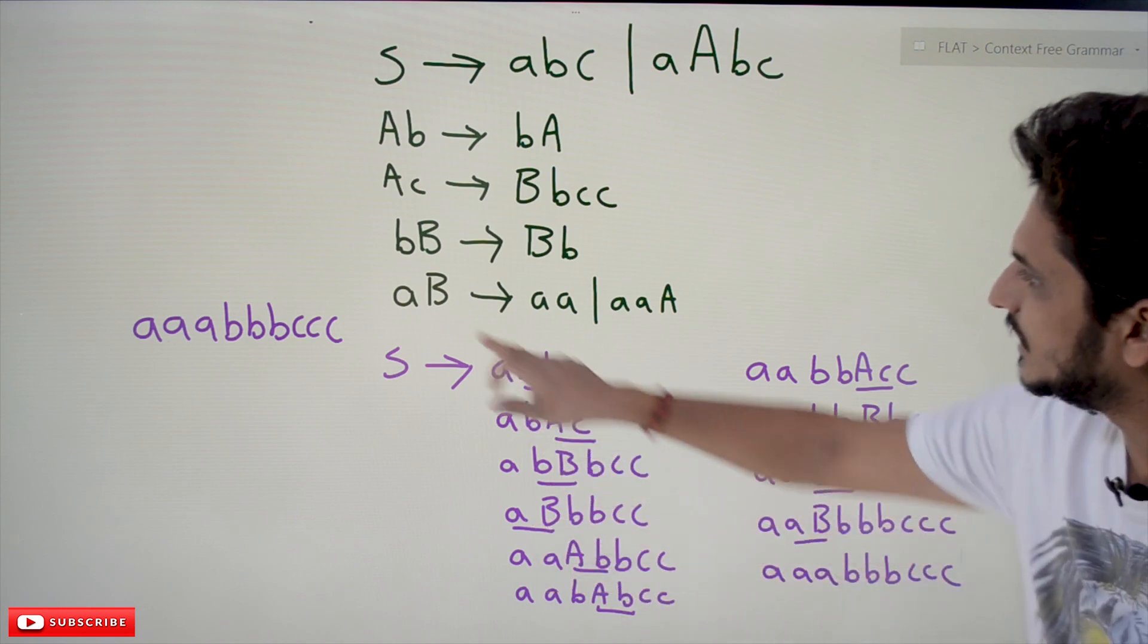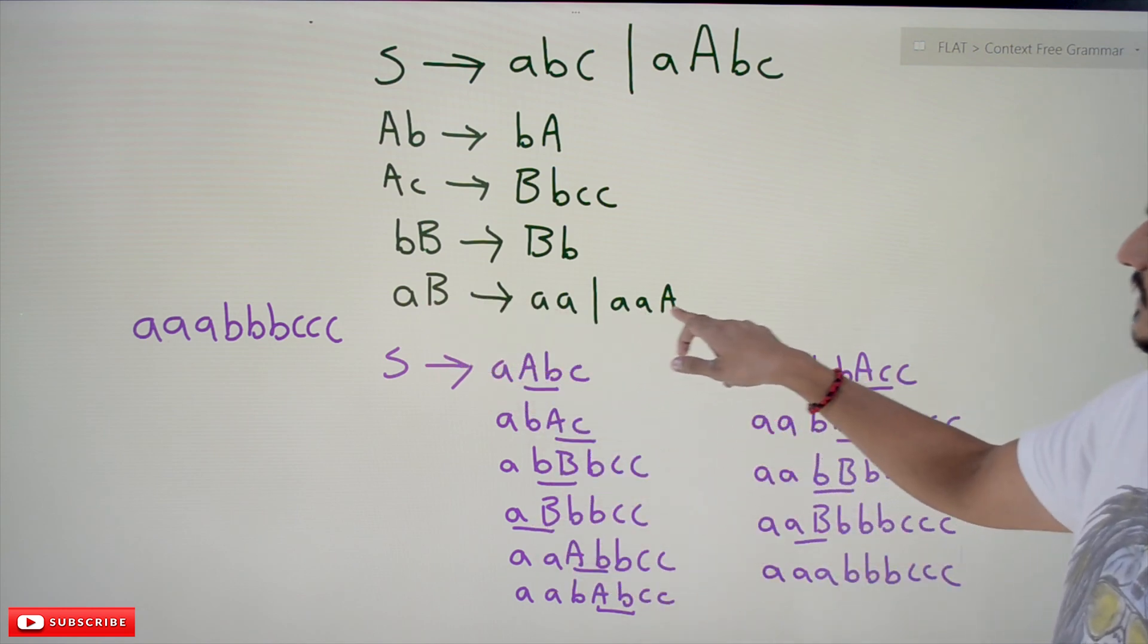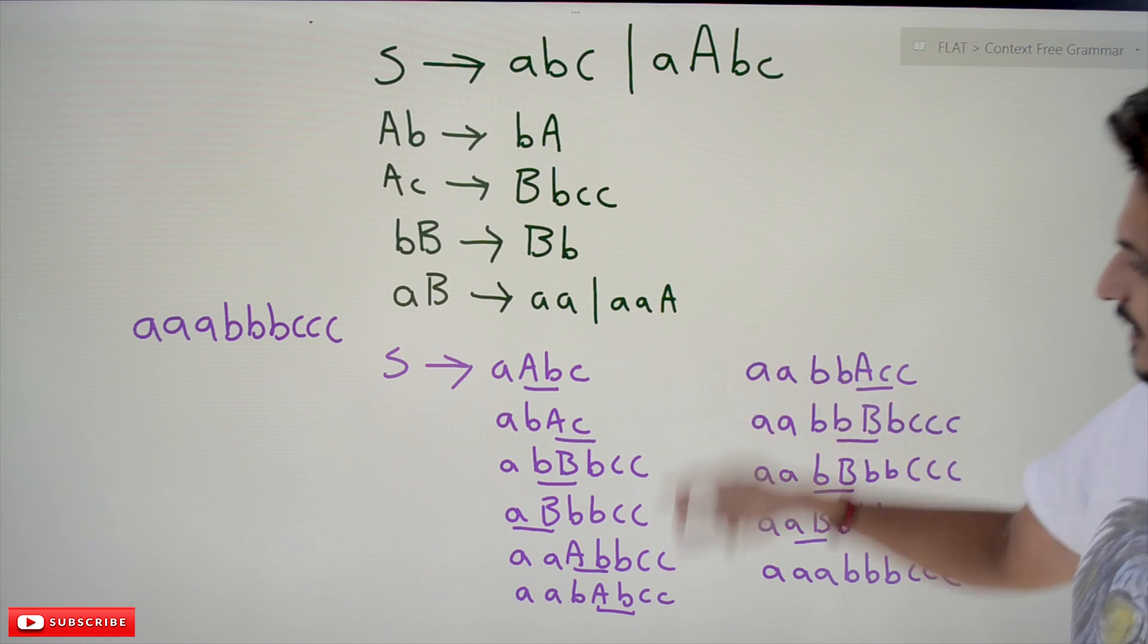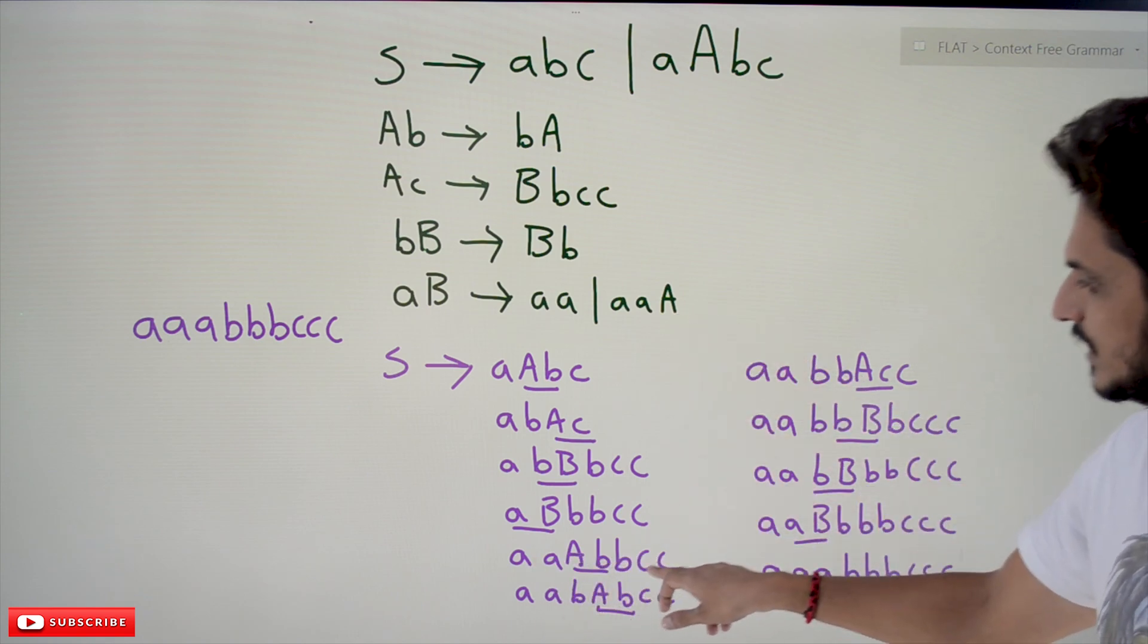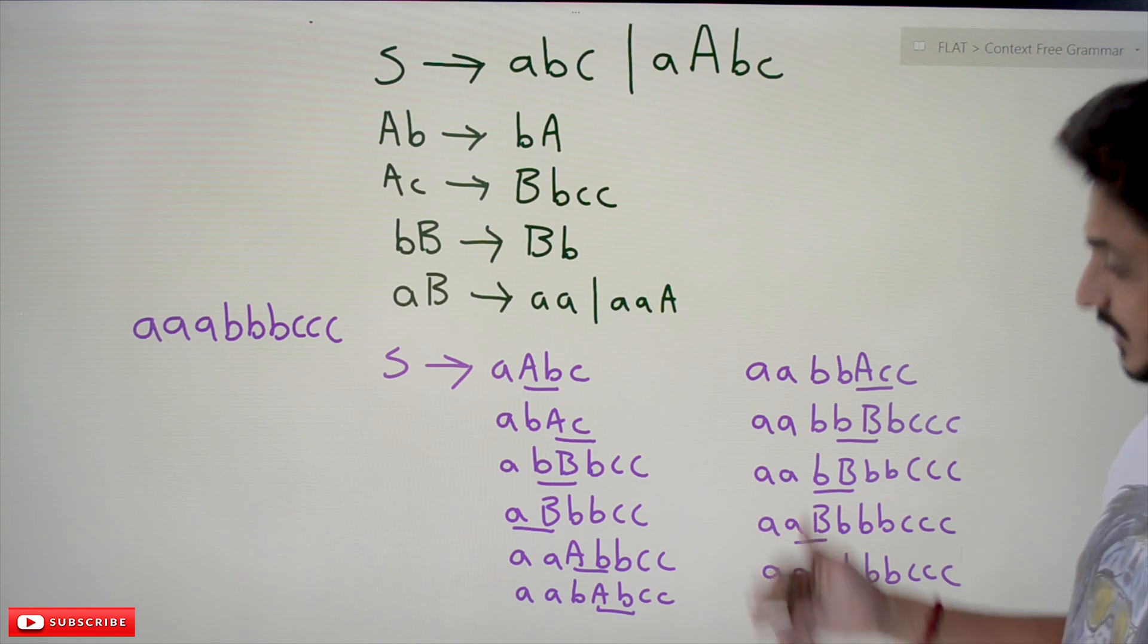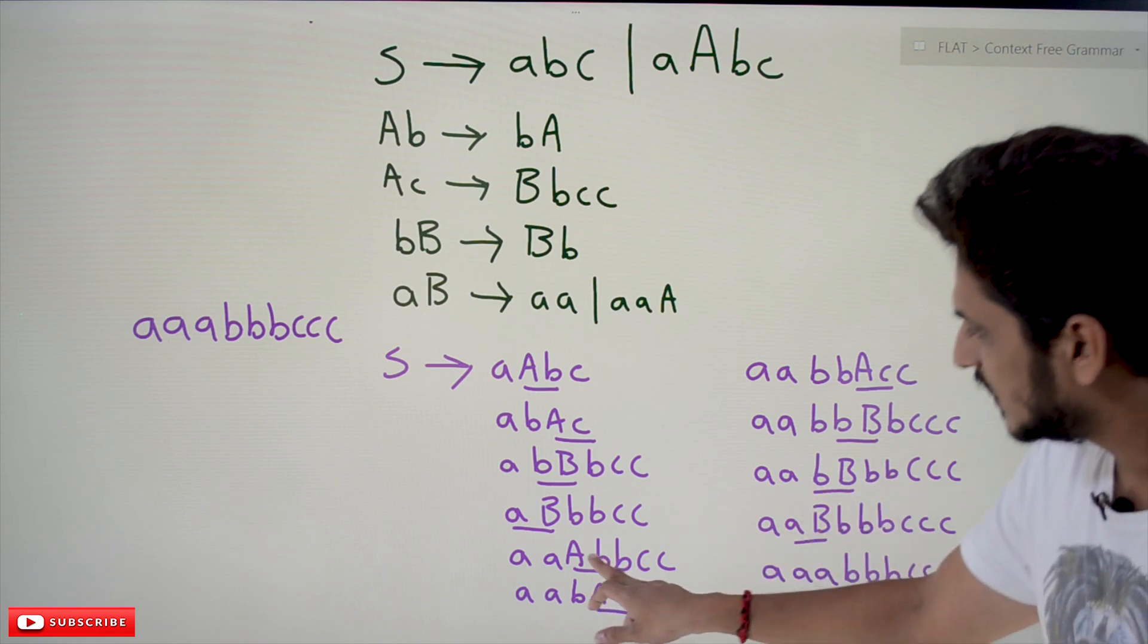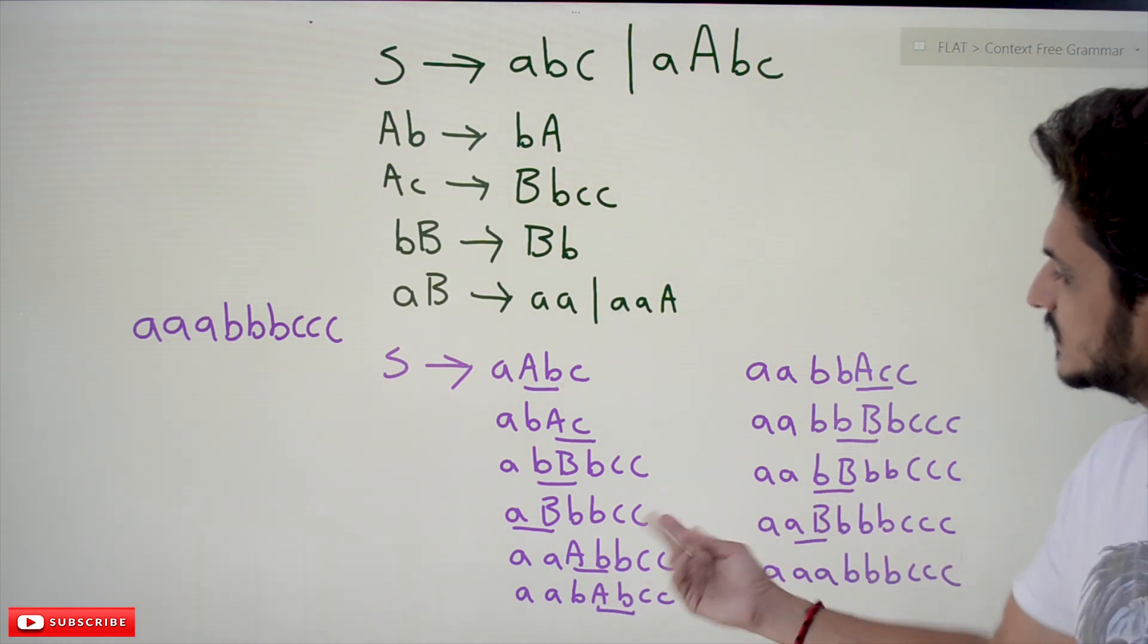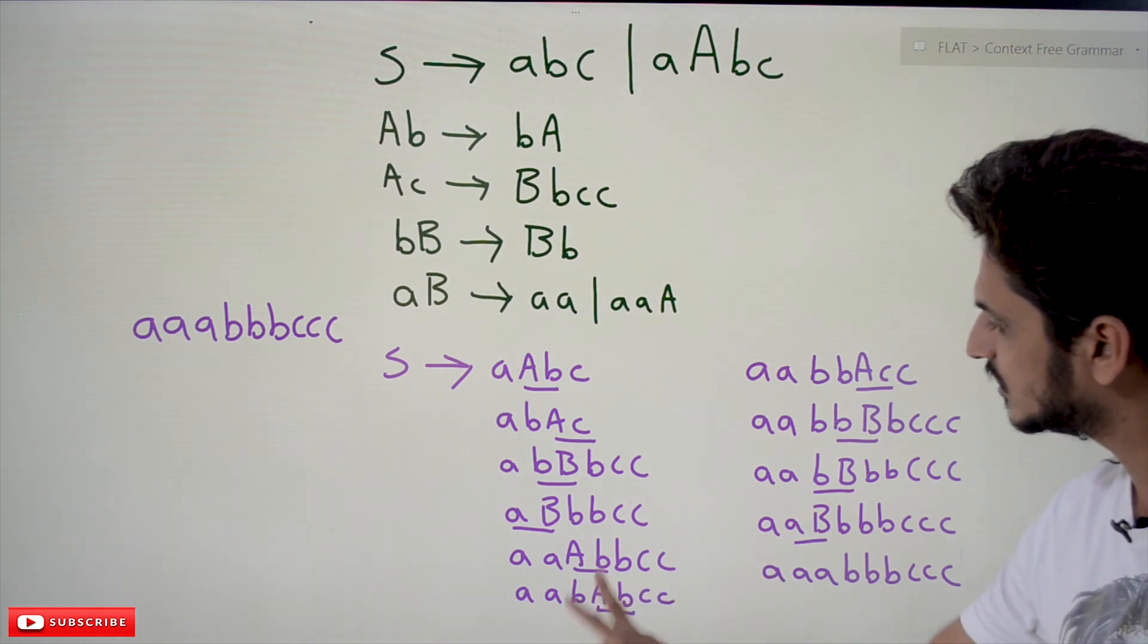In place of AB, we can write aAb. So we get aAbbcC. This is the production we have so far in the derivation. Now Ab is converted to bA again.